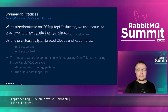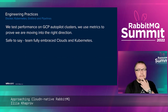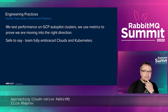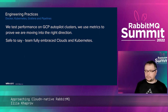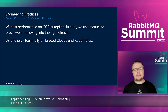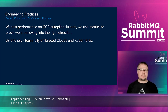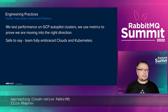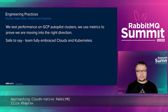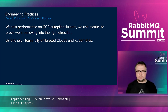One really important thing about engineering practices is that the team has fully embraced clouds and Kubernetes. Each major feature is tested across different cluster configurations, Grafana dashboards are used, and all these things are monitored. Kubernetes is now inside the daily process of the RabbitMQ team.